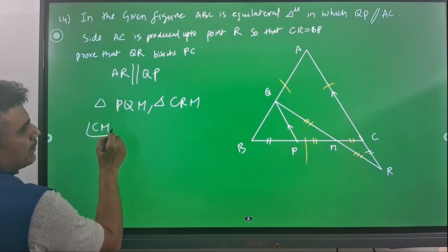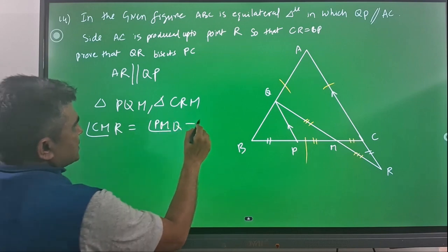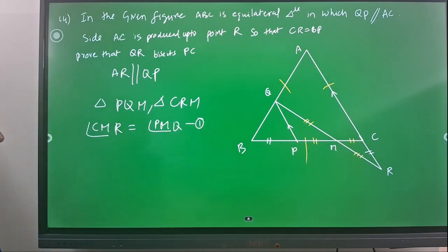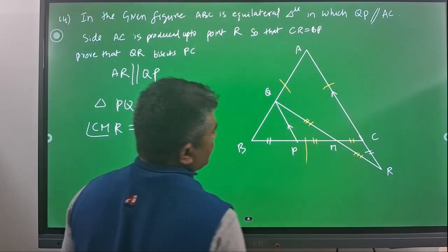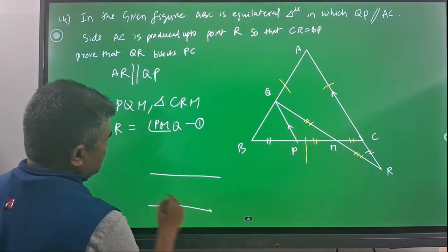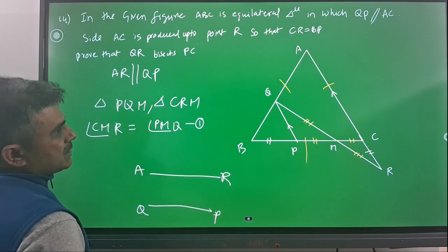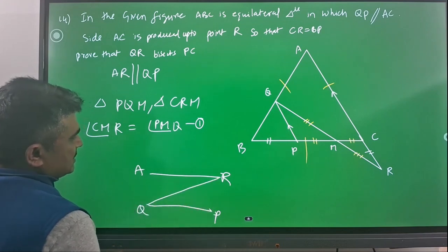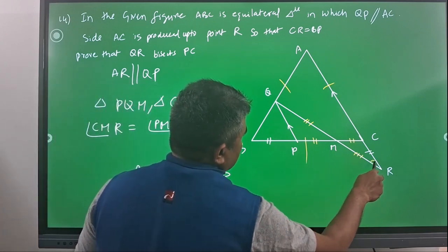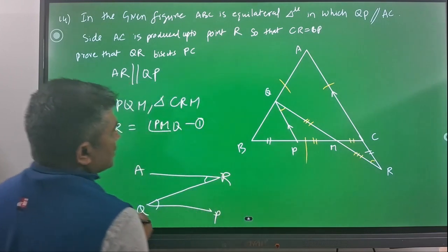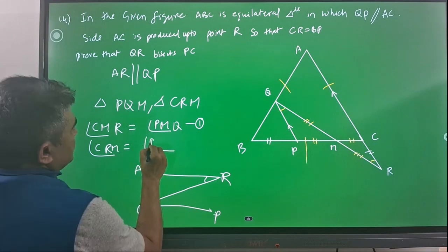So, angle CMR is equal to angle PMQ — that is the first relation from vertically opposite angles. Since AR is parallel to QP, considering QR as the transverse, the alternate angles on either side will be equal, meaning angle CRM is equal to angle PQM. That is the second relation.